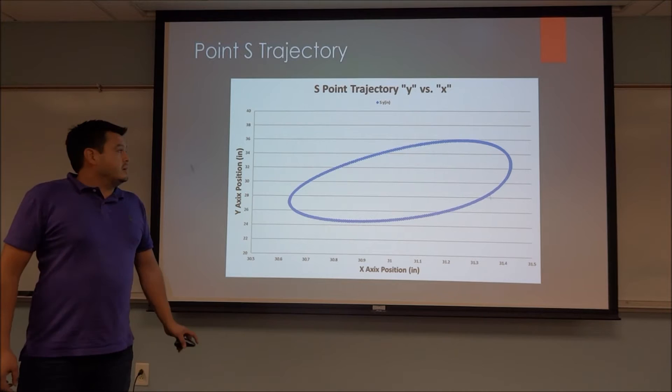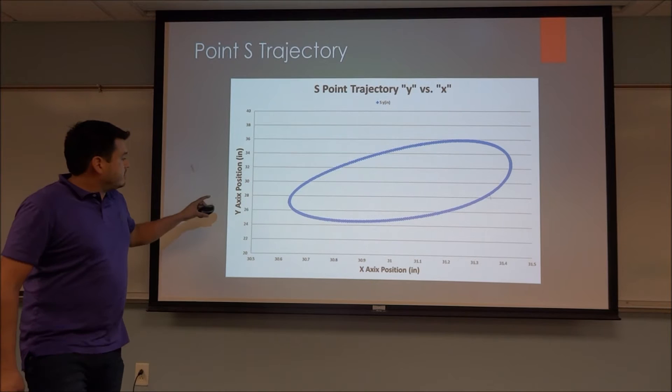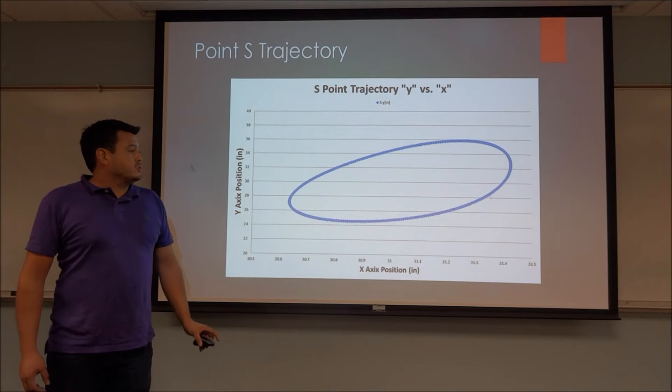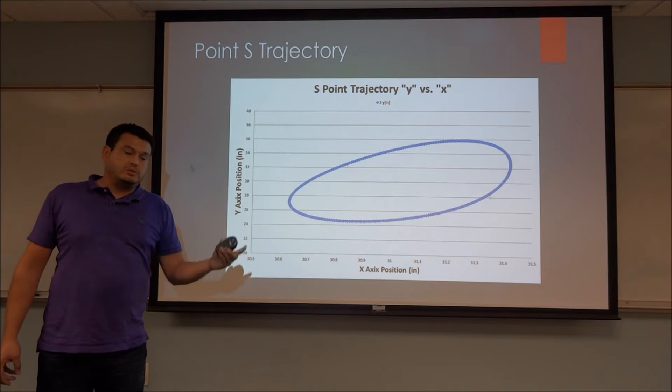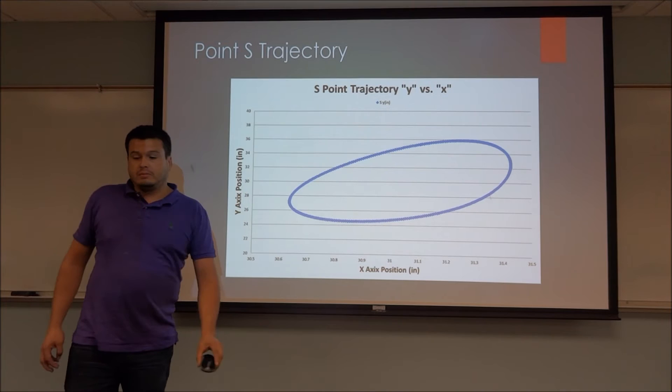This is the trajectory of point S. We were asked to find the trajectory. As you can see, it makes an oval shape. This is because we chose a small angle between the R3 link and the extension link, only 10 degrees, so that's why it has a narrow motion like that.